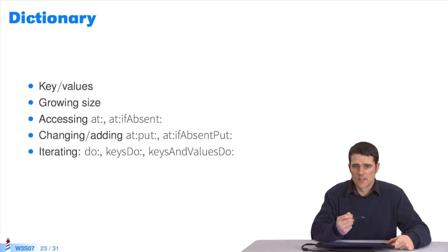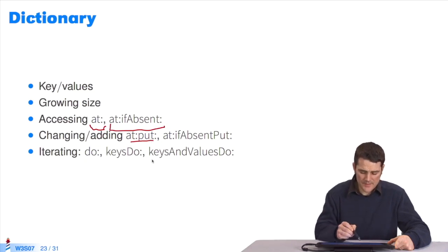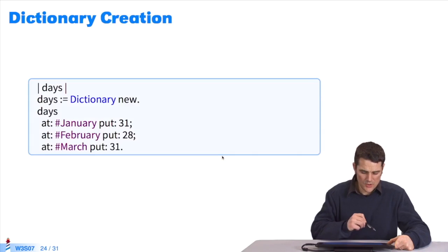Dictionaries are a group of collections' key and values. I associate a value to a key. They can be extended. They grow with every added element. There's also an unusual API when it comes to this collection. Typical AT: message, AT:IFABSENT:. What do I return if I want to access a specific key that doesn't exist? AT:PUT: inserts a new value into a specific key. I can iterate using typical messages such as DO:. But also new messages, such as KEYSDO:, which browses all the dictionary's keys or KEYSANDVALUESDO:.